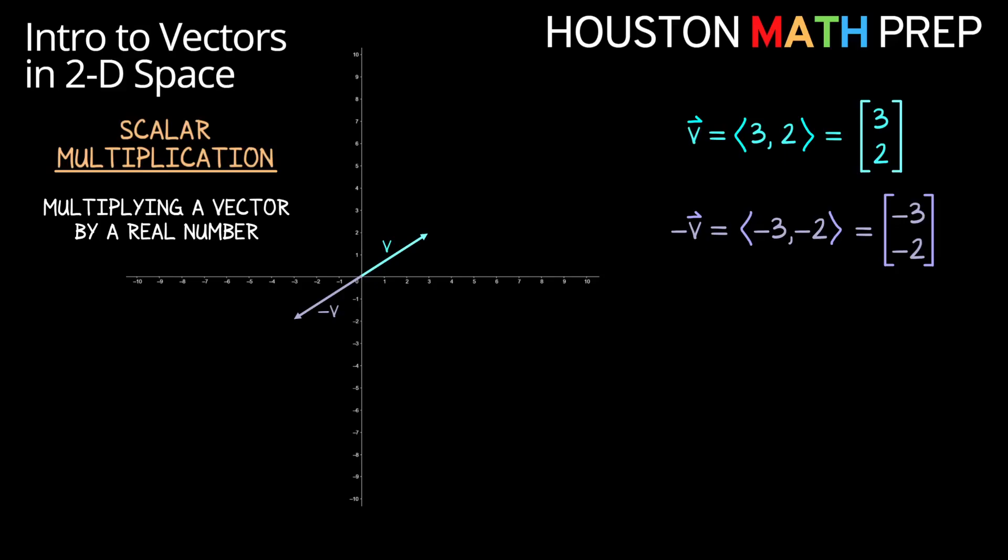Now imagine what happens if we add these two vectors together, vector V plus vector negative V. We get a sum or resultant that has zeros for all the entries. If we want to write this using shorthand, we can write a vector that has zero for every entry as the zero vector, which is just a zero with the vector notation over it. We want to be careful and not just write the number zero. Think about the kind of objects we're working with here. We aren't adding real numbers, we're adding vectors. So our answer needs to be a vector, not a number. And so we make sure to say that this is the zero vector.